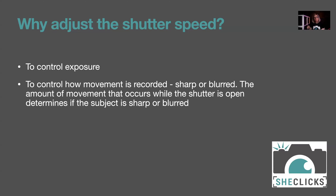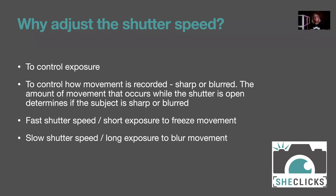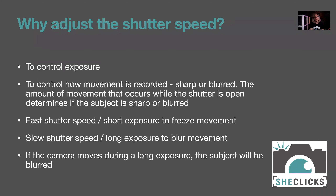If a subject barely moves in a 60th of a second it will be pretty sharp. It's about understanding the relationship between subject speed and shutter speed. Landscapes don't move much so you can use a slow shutter speed. Generally, a fast shutter speed or short exposure freezes movement, and a slow shutter speed or long exposure blurs movement. Long exposures of several seconds or minutes are used for blurred silky water or blurred clouds above a still landscape.